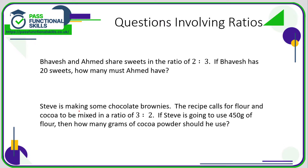In the first question we're told that Bavesh and Ahmed share sweets in the ratio two to three. Because Bavesh is mentioned first and Ahmed second, Bavesh gets the two and Ahmed gets the three. We're told that Bavesh gets twenty sweets, so we are boosting this ratio by ten. If Bavesh gets ten times his corresponding figure in the ratio, then Ahmed will get ten times three, so Ahmed gets thirty sweets. The ratio two to three scales up to twenty to thirty — ten times the simplified ratio — and we know we're multiplying by ten because Bavesh's two has moved up to twenty.